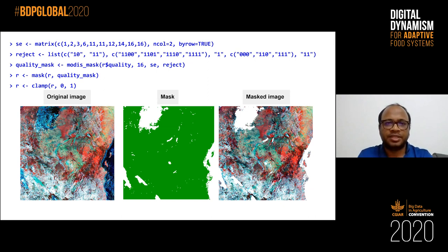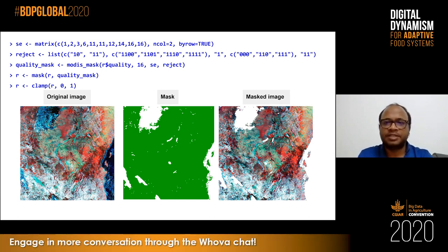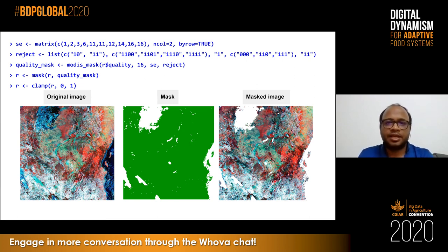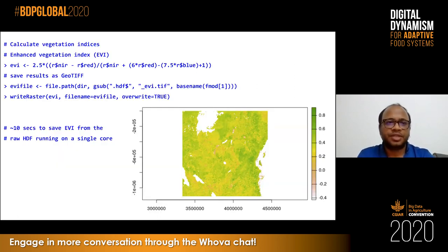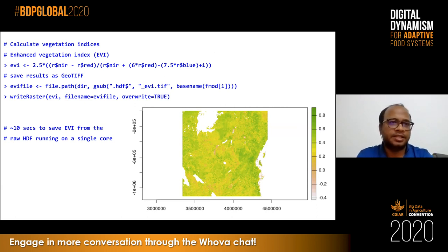Once you do that — shown in the first two lines — you come up with a mask. The center image shows the mask: the green pixels are clear pixels, and the white ones are where pixels are unusable based on your mask definition. You use that mask to mask out the cloudy pixels, and on the right-hand side you get the masked image for any further processing. From here, to convert this to a vegetation index like EVI and save it to a GeoTIFF file in local storage, it's just a simple algebraic equation — the same kind of equations you would write in raster. And that's all it takes.